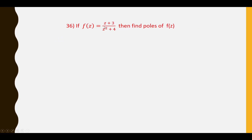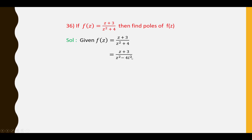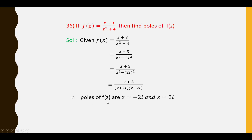Thirty-sixth question: If F(Z) = (Z + 3)/(Z² + 4), find the poles of F(Z). We write Z² + 4 = Z² − 4i² = (Z + 2i)(Z − 2i). So F(Z) = (Z + 3)/[(Z + 2i)(Z − 2i)]. Therefore the poles of F(Z) are Z = −2i and Z = +2i.